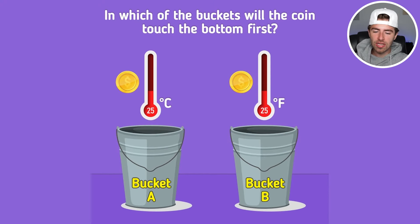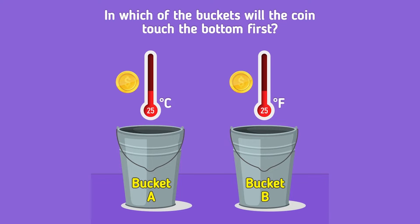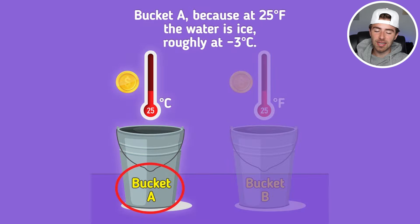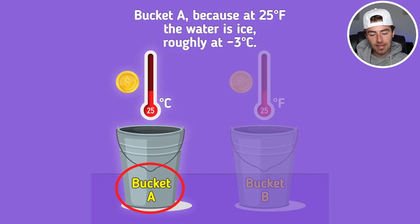Which bucket will the coin touch the bottom of first — 25 degrees Celsius or 25 degrees Fahrenheit? Comment down below Bucket A or Bucket B. It's going to hit the bottom first in Bucket A, because at 25 degrees Fahrenheit the water is ice — that's negative 3 degrees Celsius. That bucket won't let any coin through. But Bucket A at 25 degrees Celsius is around 77 degrees Fahrenheit, so the coin hits the bottom first because it's not solid ice.